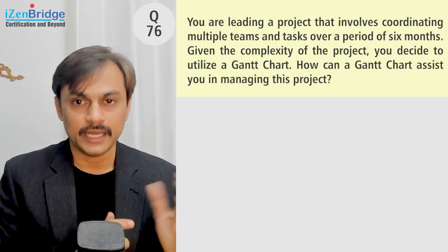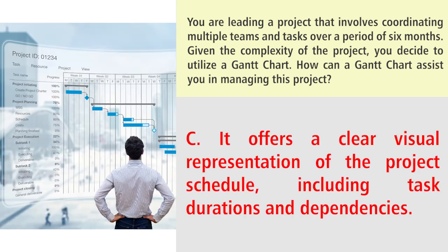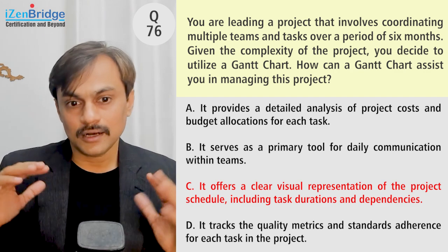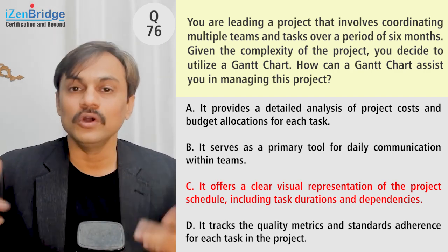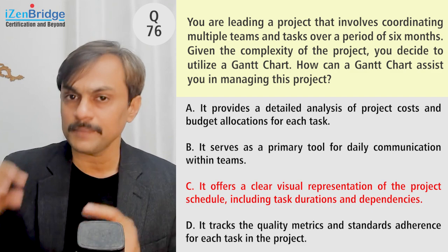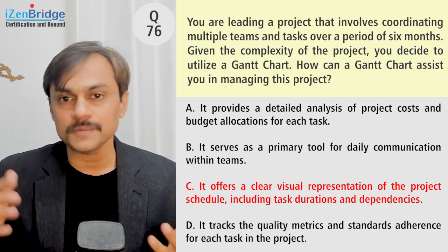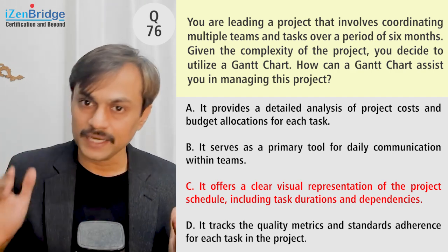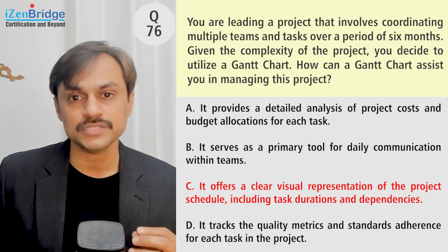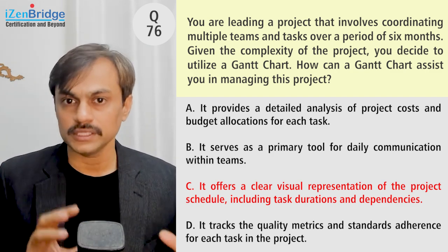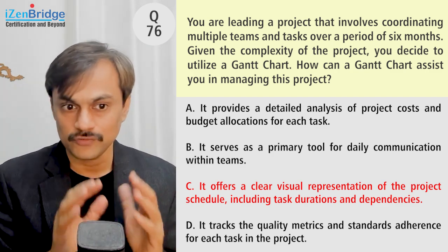Option C: it offers a clear visual representation of the project schedule, including task duration and dependency. That seems to be the primary purpose of a Gantt chart. Comparing B and C — option B suggests you'd only ever look at the Gantt chart as your primary daily tool, which may not apply to all projects. But option C's utility is always present: visual presentation of schedule, task duration, dependencies, milestones, critical path, and progress tracking. Option C looks great.